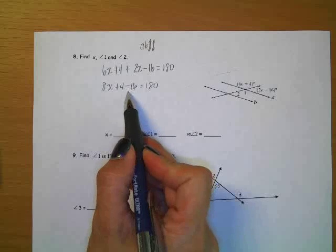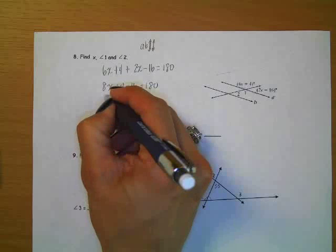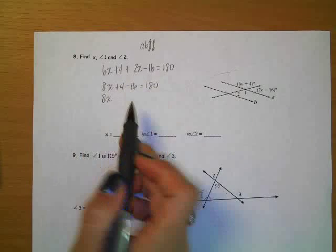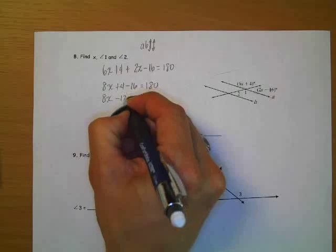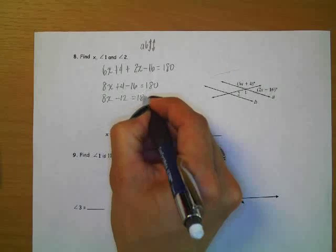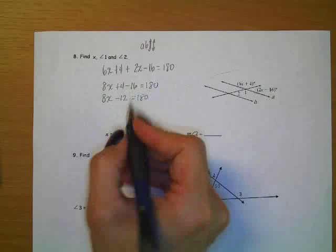So anything we can combine over here. Sure. We can combine. We didn't do anything with the 8x. We can combine this positive 4 and the negative 16, which is going to give us negative 12 equals 180. Now it's easy. Now it's a two-step equation.